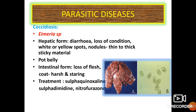For parasitic diseases, coccidiosis is caused by Eimeria species. The hepatic form is caused by Eimeria stiedae and causes diarrhea, loss of condition, white or yellow spots, nodules or sticky material, and pot belly appearance. In the intestinal form, there will be weight loss and the coat will be harsh and staring. Treatment involves Sulphadiazine, Sulphadimidine and Nitrofurazone.